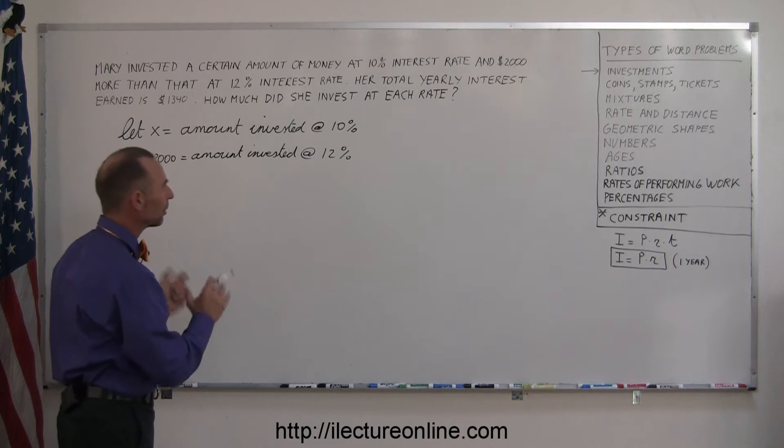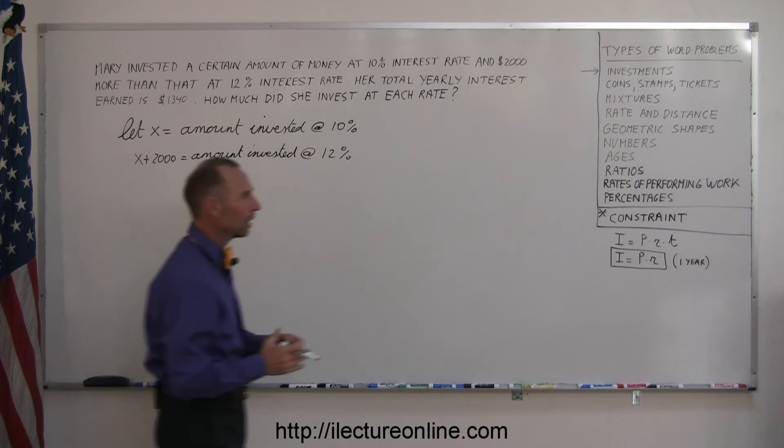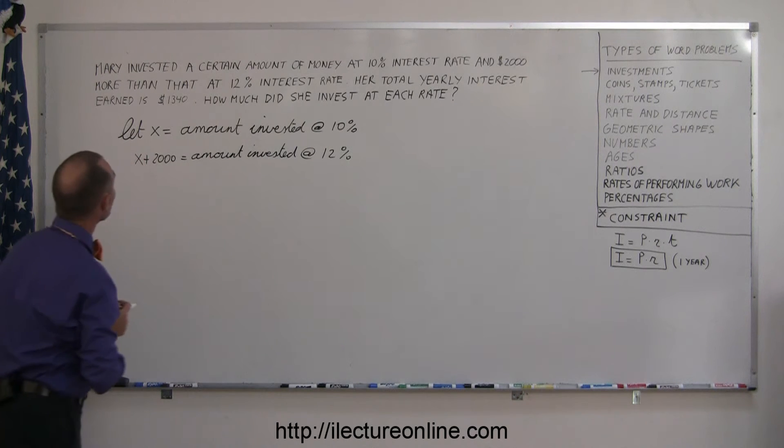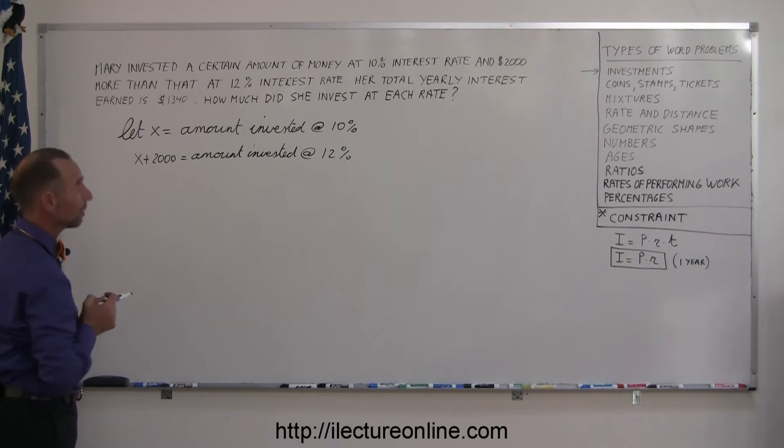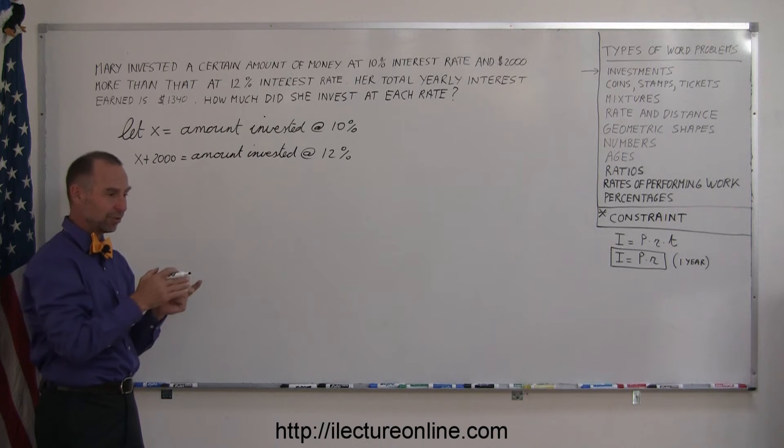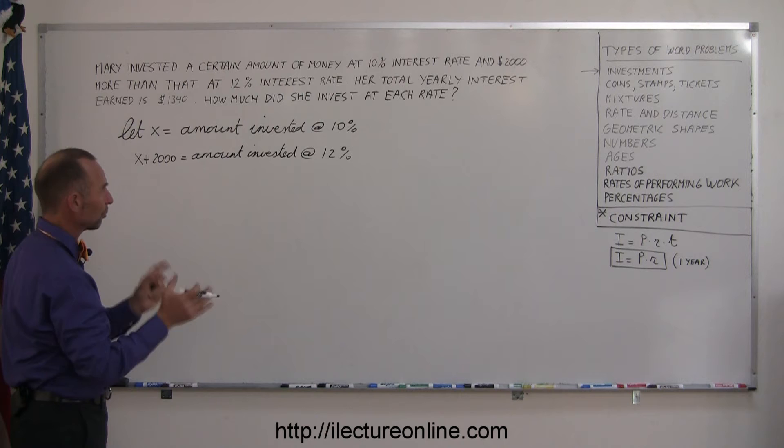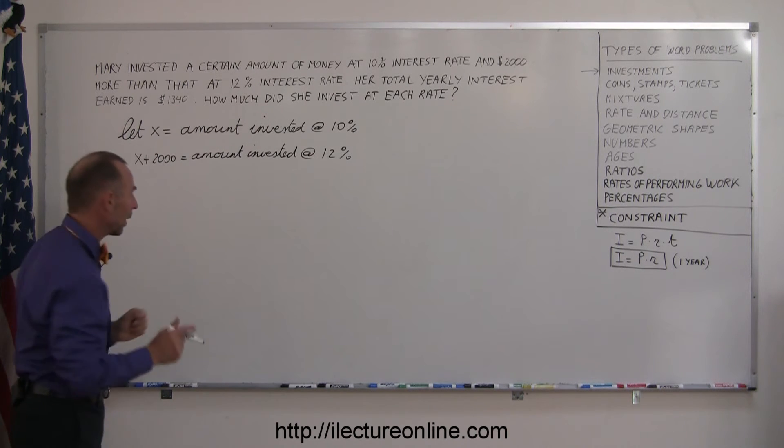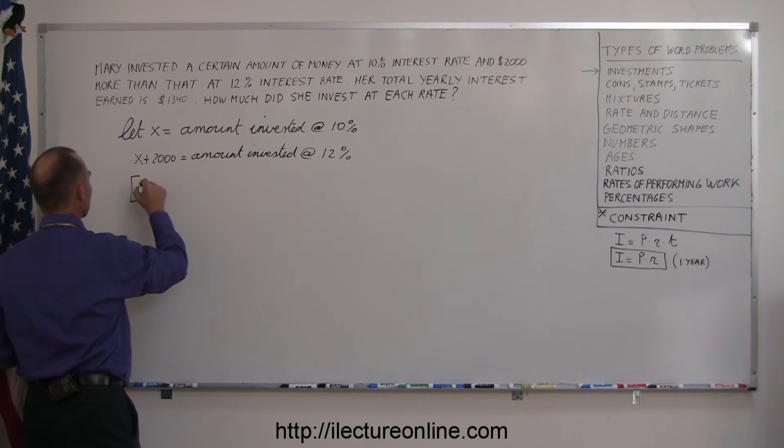Now we can come up with an equation. There's some sort of constraint that will guide us in coming up with a good equation. If she invests some money at 10% and some money at 12%, and all that she earns from both investments adds up to $1,340, we could write that the interest earned